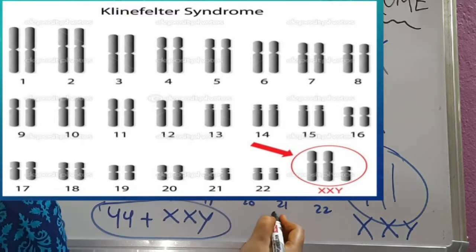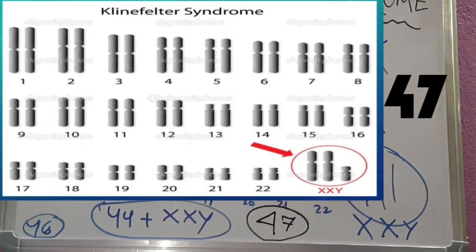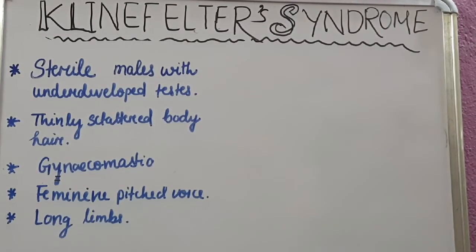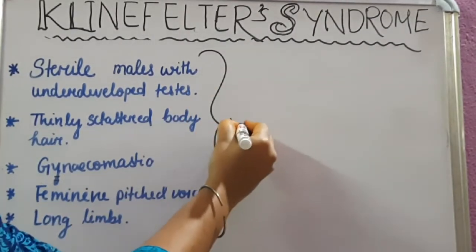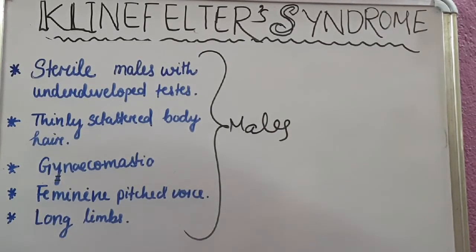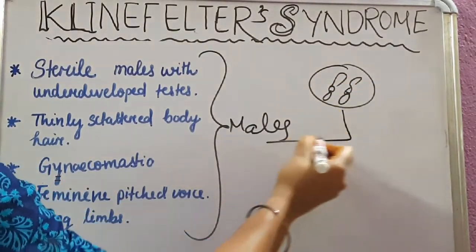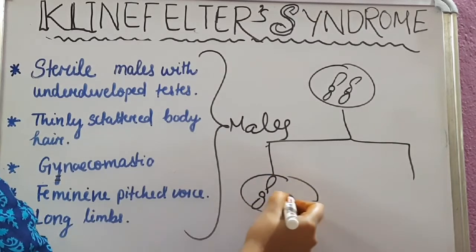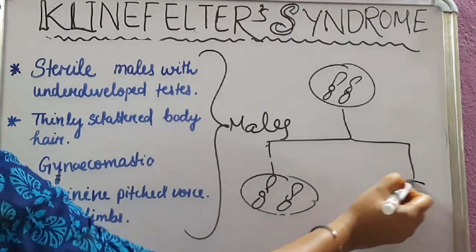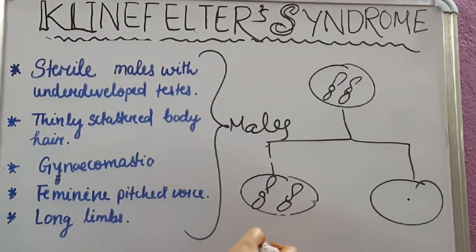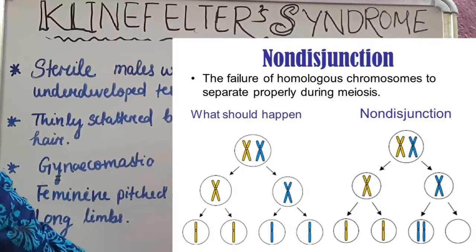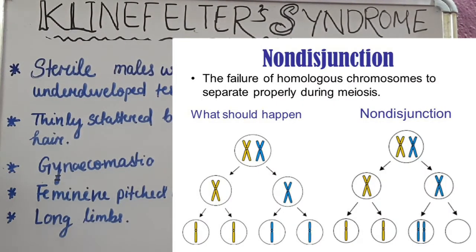Normally 46 chromosomes are present, but in Klinefelter syndrome the total number of chromosomes found is 47. Klinefelter syndrome occurs in males during the non-disjunction of meiosis, where chromosomes fail to separate properly — one set gets both chromosomes and the other set is left empty. This is called non-disjunction.